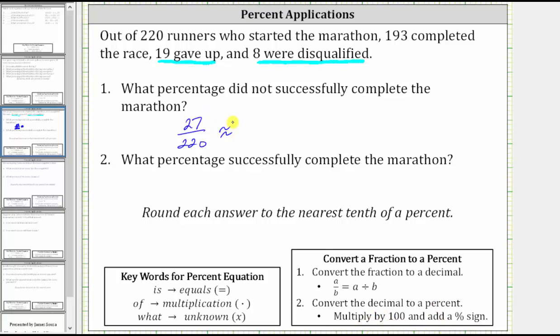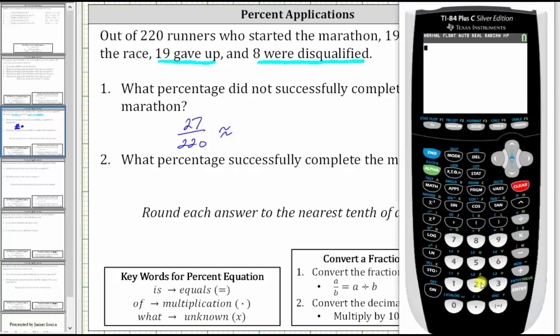Let's go to the calculator to perform the division. We have 27 divided by 220, which gives us a decimal. Now we multiply by 100 and add a percent sign, or move the decimal point two places to the right and add a percent sign.